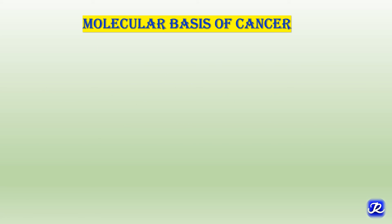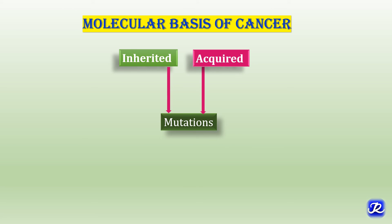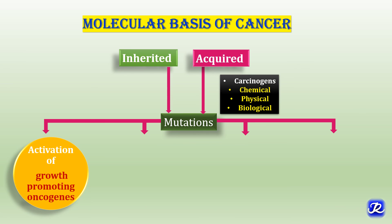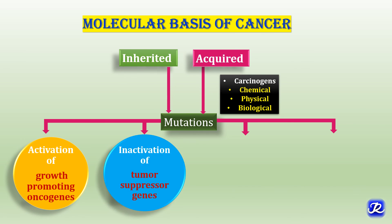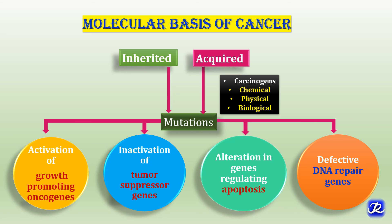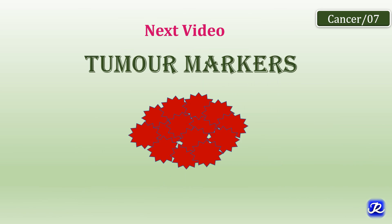In summary, DNA damage is central to the causation of cancer. If DNA damage is not repairable, it leads to mutations, which can be inherited or acquired from carcinogens — chemical, physical, or biological. These mutations lead to changes in important regulatory genes: activation of growth promoting oncogenes, inactivation of tumor suppressor genes, alteration in genes regulating apoptosis, and defective DNA repair genes. These four mechanisms explain the molecular basis of carcinogenesis. In the next video we will study about tumor markers. Thank you for watching.